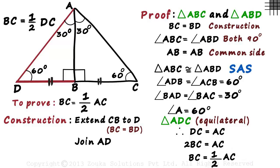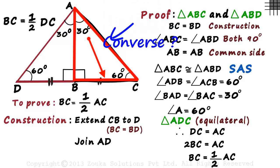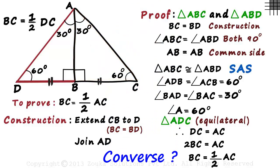In a 30-60-90 triangle, the length of the side opposite the 30 degrees angle is always half the length of the hypotenuse. Does the converse also hold true? We see that in the coming videos.